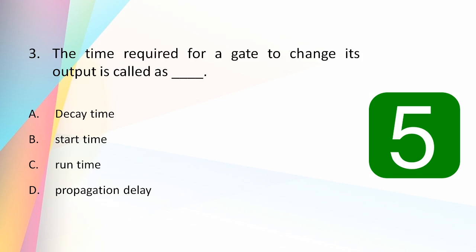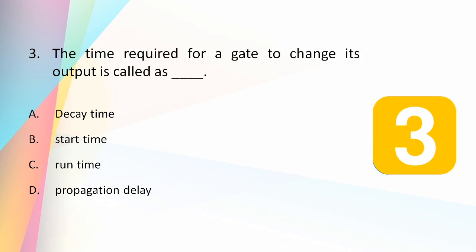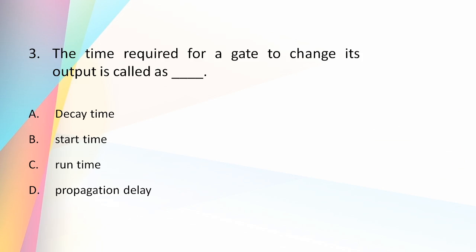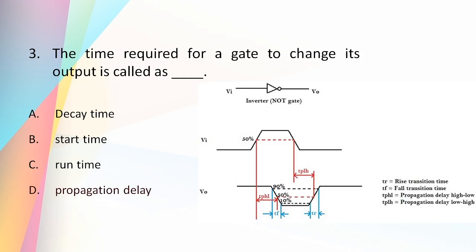The time required for a gate to change its output is called: decay time, start time, run time, or propagation delay? The answer is propagation delay — the time required to change the output of a gate is known as the propagation delay.